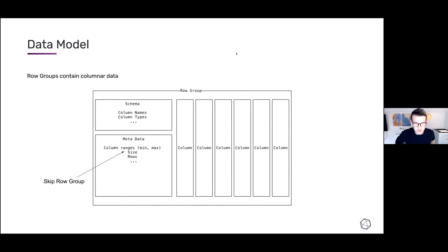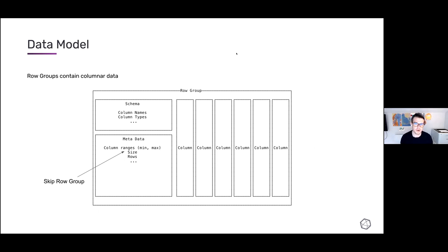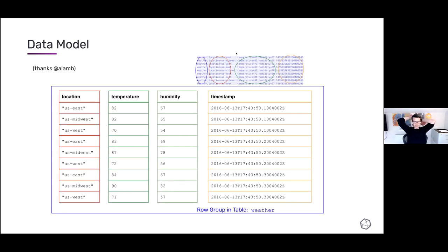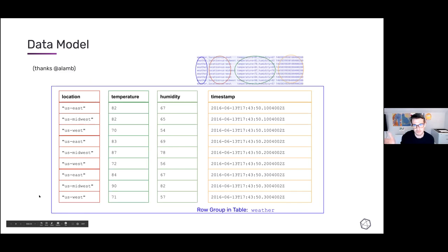A row group is the lowest unit before we get to a column. It has a schema, metadata for each column including min/max. Here's a slide showing how we map line protocol to this model — the blue box is basically a row group and the colored columns are IOx columns. You can see from the circles how we map InfluxDB line protocol to these different column types.